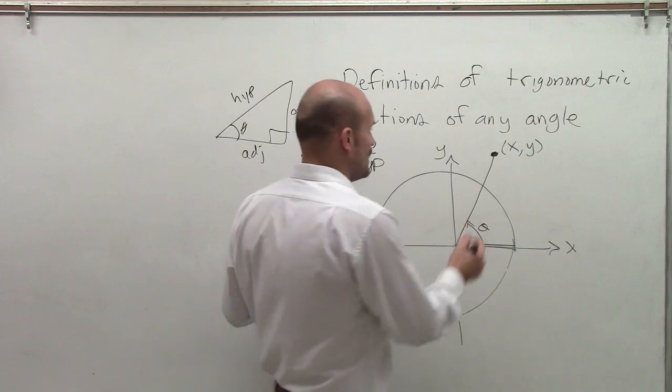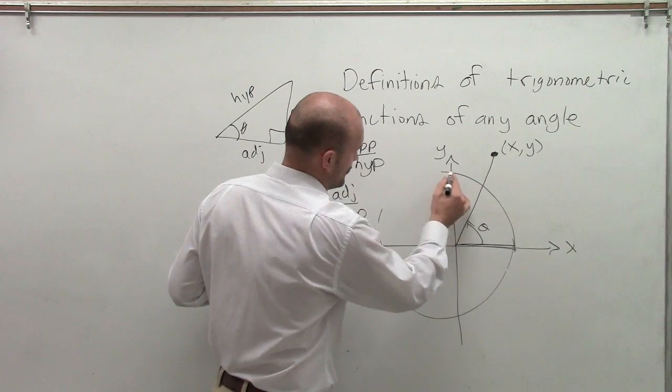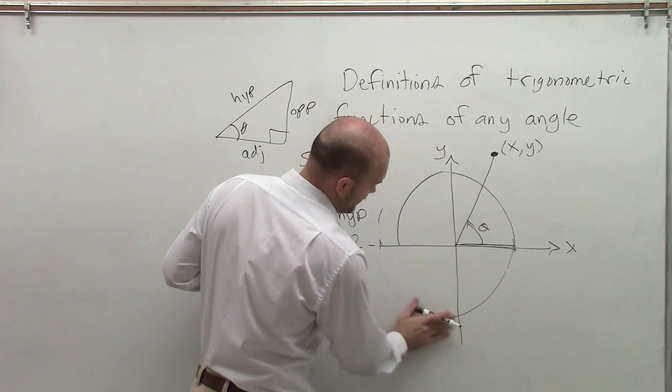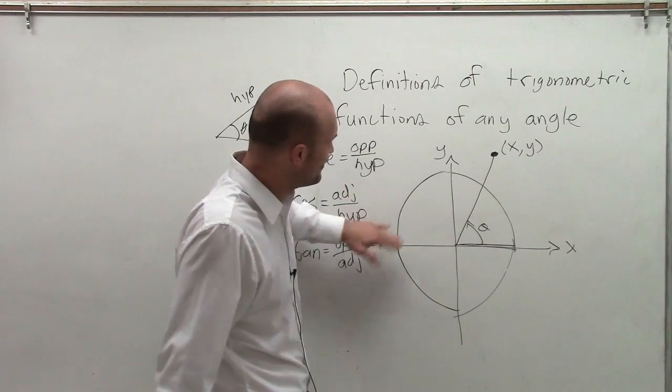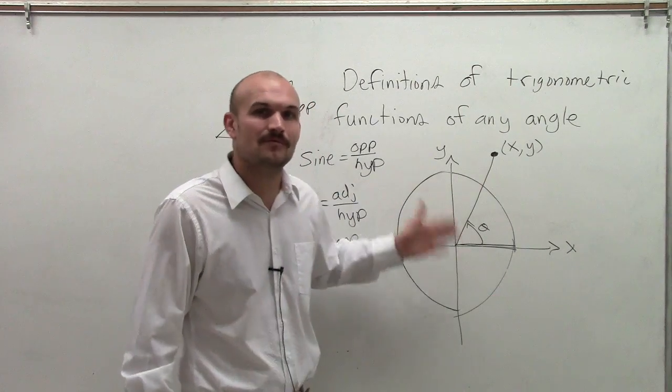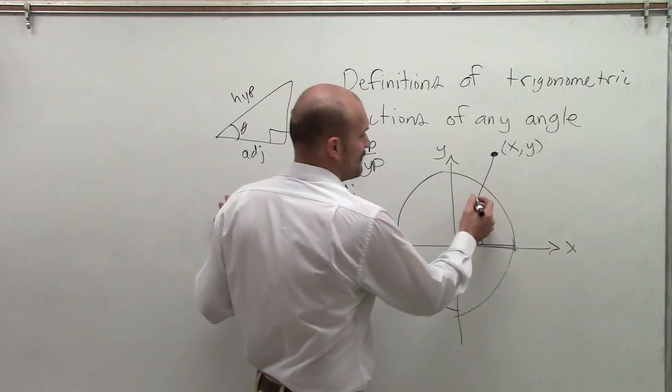But now, my radius is not going to be 1. If I was looking at the unit circle - this is a horrible unit circle, I don't even know if I'm making it any better - but remember, the unit circle always had a radius of 1. If I pick a point off the unit circle, I no longer have a radius of 1.